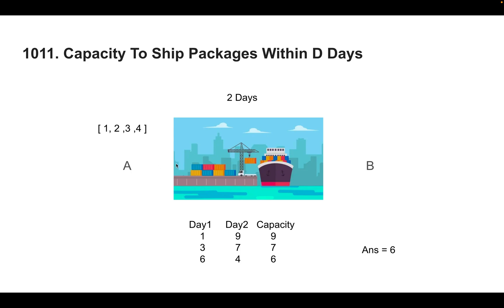So without further ado, let's try to understand this problem. You have two cities — city A and city B — and you also have a ship in between. You have to transfer goods from city A to city B in a given number of days. You have to find the minimum capacity of the ship in order to transfer the goods from A to B.